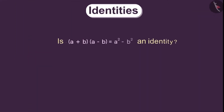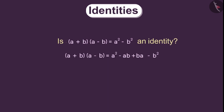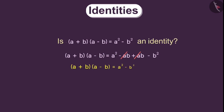Can you check if this is an identity? Consider this expression. Let us simplify this by removing the brackets. It will be equal to this. Now, here since a, b is same as b, a — positive ab and negative ab will get cancelled. Therefore, we will get this. We can see that this is the expression on the right-hand side. Therefore, this is an identity.